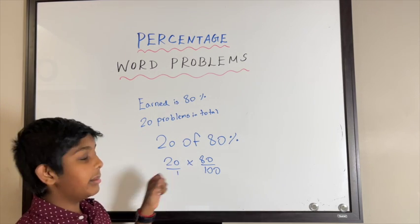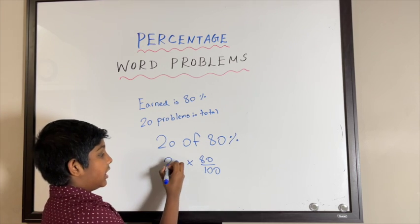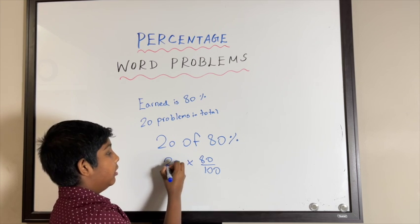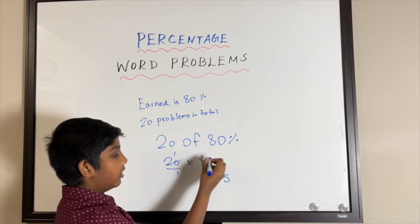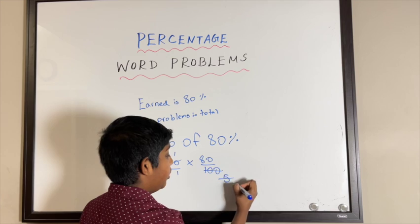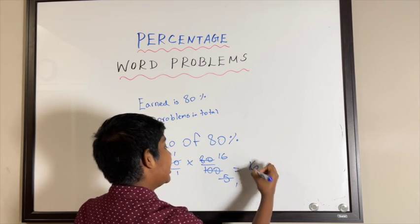Now let's solve this. There's no denominator, so I'm just going to assume that's 1. So 20 over 1 times 80 over 100. We can reduce 20 and 100 by 20, so that'll be 1 and 5. Then we can reduce these two by 5, so 1 and 16. The answer is 16.